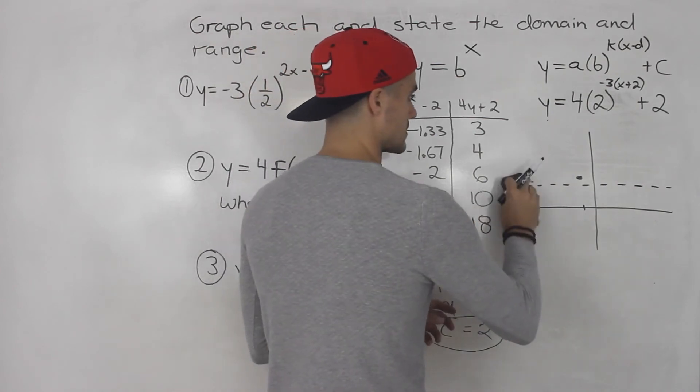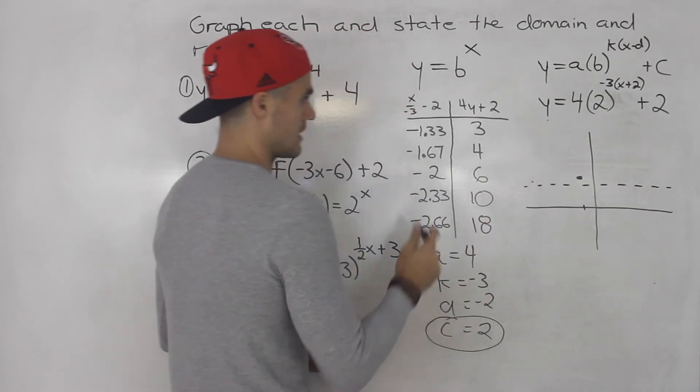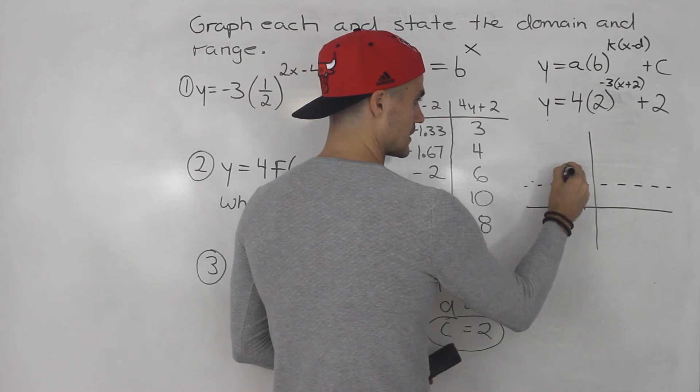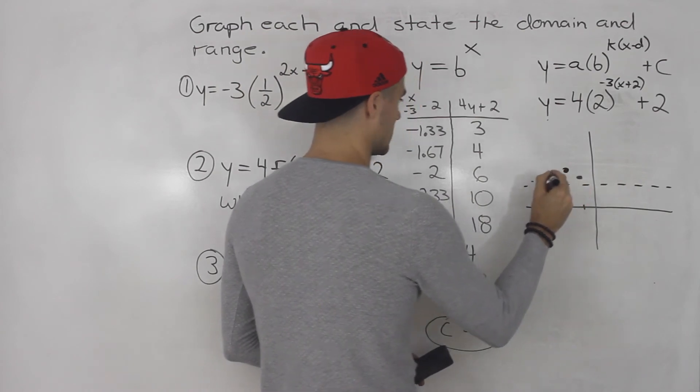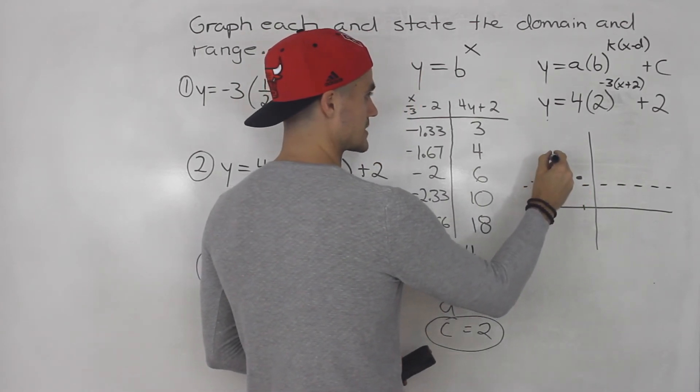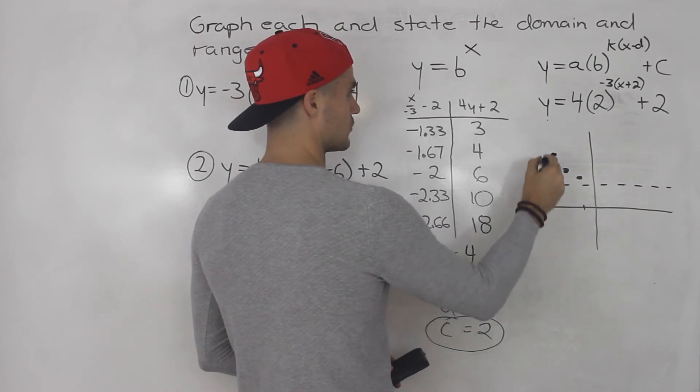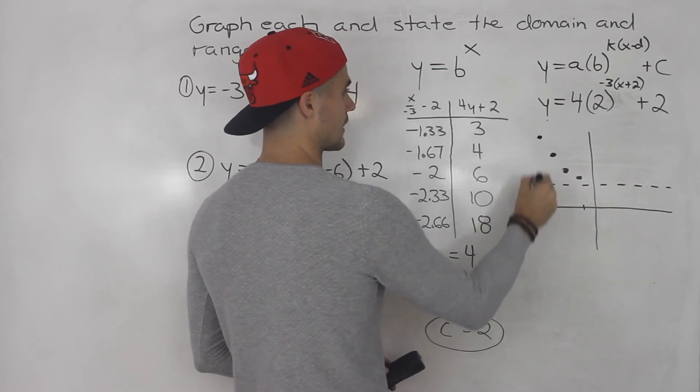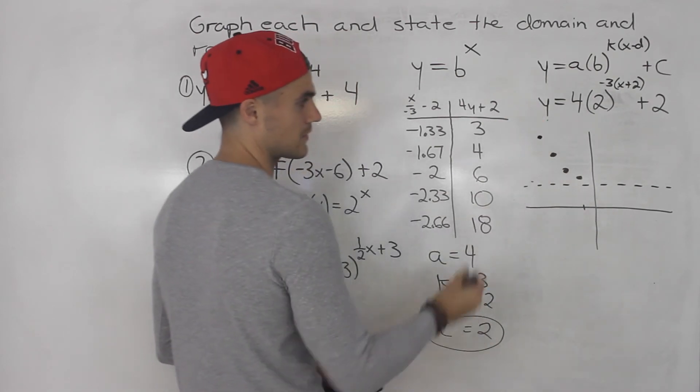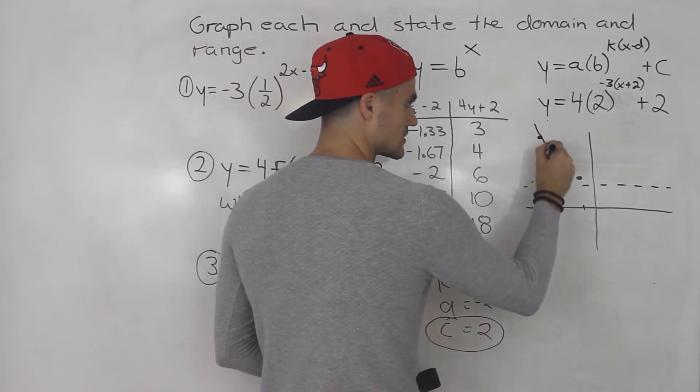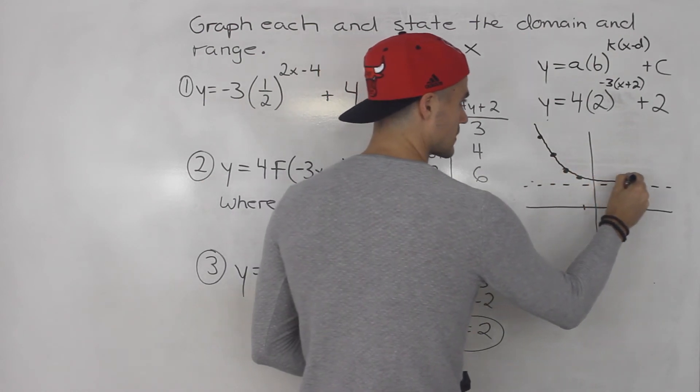Let me erase this here. Negative 1.67 and 4 that's going to be like here, negative 2 and 6 maybe up there, negative 2.33 and 10 up here, and then negative 2.66 and 18 is going to be up there but you see how this is going to look, it's going to look something like that.